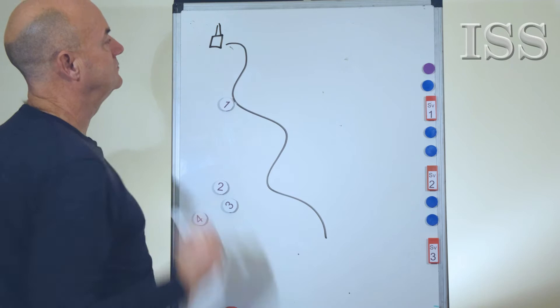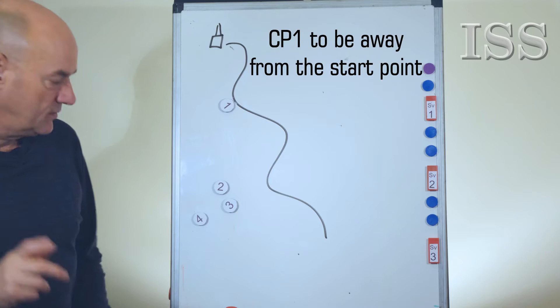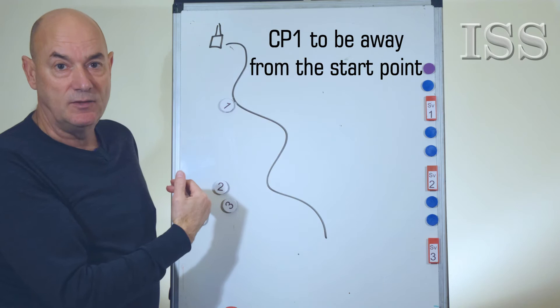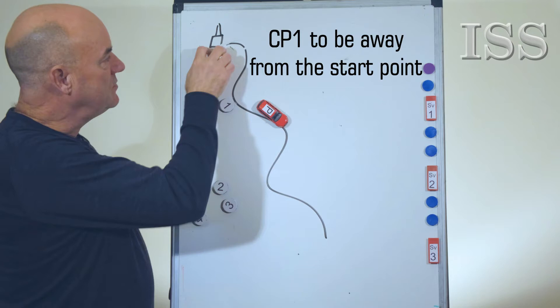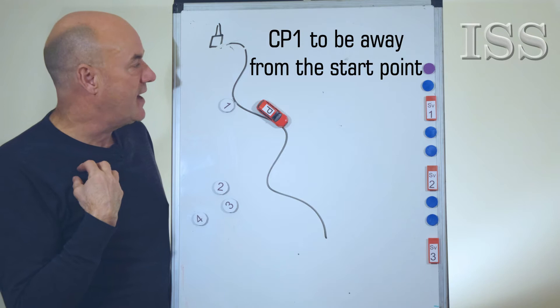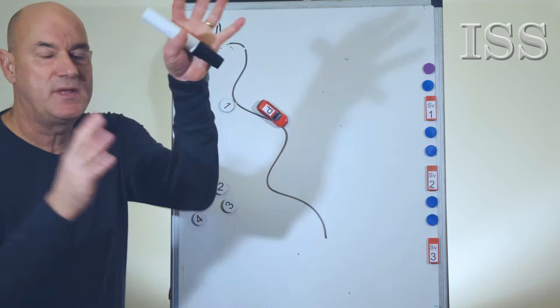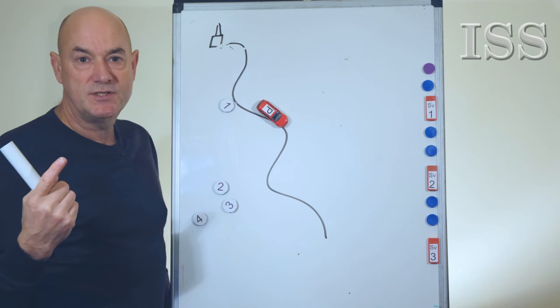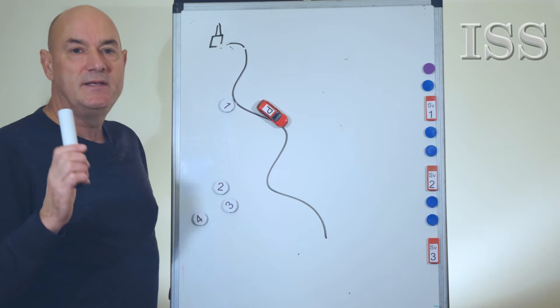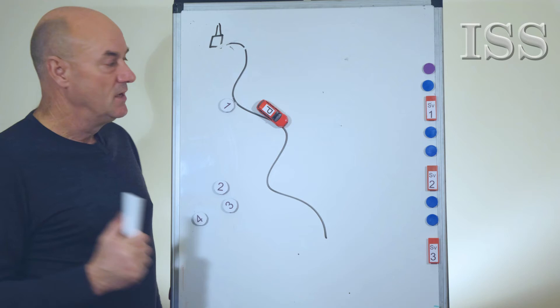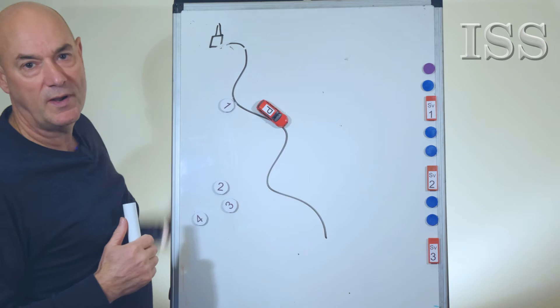Choke point one — if this is our start point, choke point one doesn't want to be too close to it. The reason being: if we're manning choke point one and surveillance is coming down, and our principal has been tasked to leave, if it's too close we're not helping ourselves. On a standby for any surveillance team at the start, there'll be cars all over the place — human error, bad communications, poor skills. I would say 90% of losses occur on a standby when the target first moves. They might have lost them; somebody may have misheard on the radio and gone the wrong way — called left-left instead of right-right.